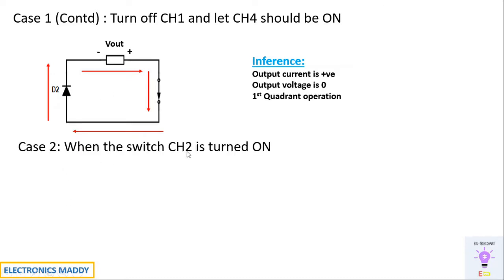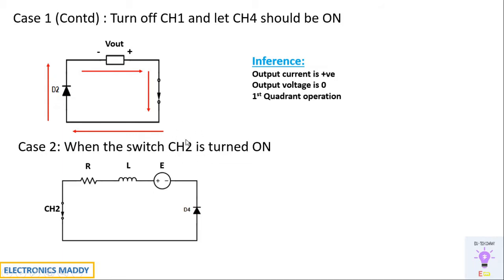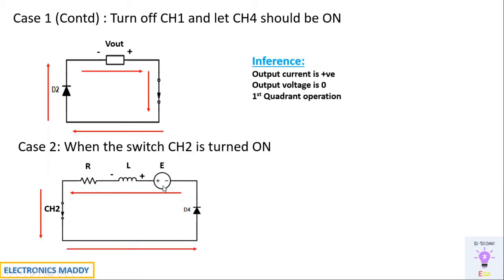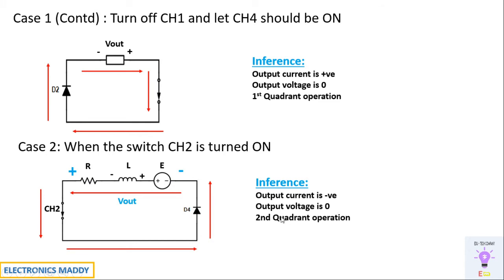In case 2, when CH2 alone is turned on, it requires a supply. The RLE load will act as a supply for turning on CH2, since there is no direct contact of CH2 with the DC supply — it comes through CH1. So the EMF, that is the battery, will act as supply to trigger CH2. CH2 is triggered through gate pulses, but the anode-cathode voltage is provided through EMF E, which is why E plays a very important role in these circuits. The inductor, which had previously discharged, starts charging again with polarity plus and minus. Current flows due to the battery, and since minus is connected to the cathode terminal of D4, D4 also conducts. With respect to the load, the current is flowing in the opposite direction — so the current is negative — and the output voltage is zero. This corresponds to second quadrant operation.